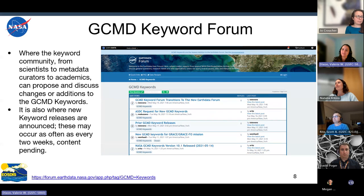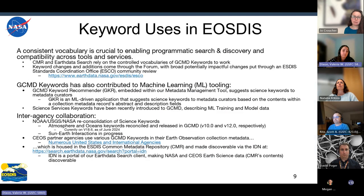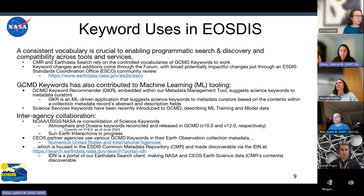For less impactful requests, we can make releases to the keywords as often as every other week. Having a consistent vocabulary is absolutely crucial to enabling programmatic search and discovery as well as compatibility across our different tools and services. We have the Common Metadata Repository (CMR) and Earth Data Search — the bread and butter of our project — which house and surface all our metadata respectively, and they rely extremely heavily on the controlled vocabularies of the GCMD keywords in order to function.